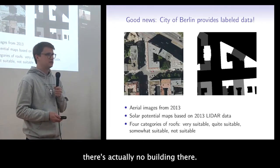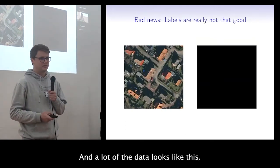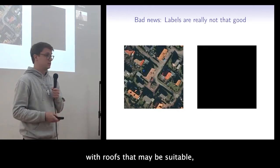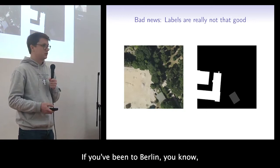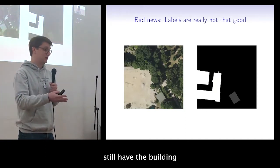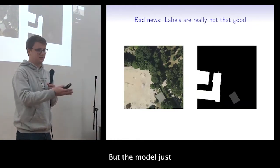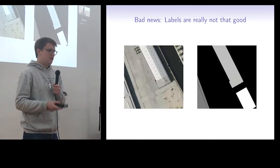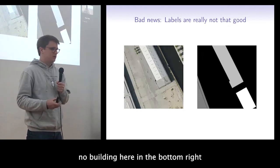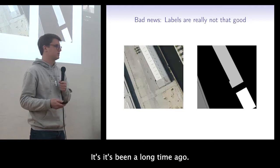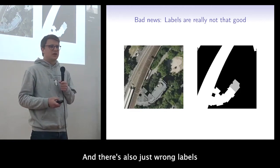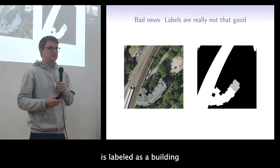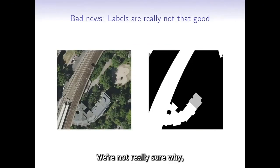But the data has problems. In the top left corner of an image, the mask indicates a building where there is actually none. A lot of data looks like this — buildings with roofs that may be suitable but have no labels. There are construction sites where labels show a demolished or not-yet-built building. Some maps are out of date. And for some reason, railroad tracks are labeled as buildings very suitable for solar — which is a real problem.